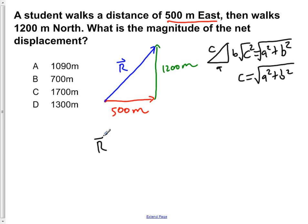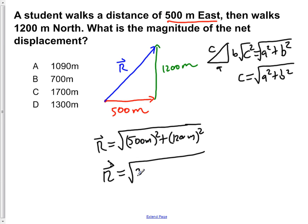If we apply that to this triangle here, we would find that R is equal to the square root of 500 meters squared plus 1,200 meters squared. So R is equal to 500 squared is 250,000 plus 1,200 meters is 1,440,000.